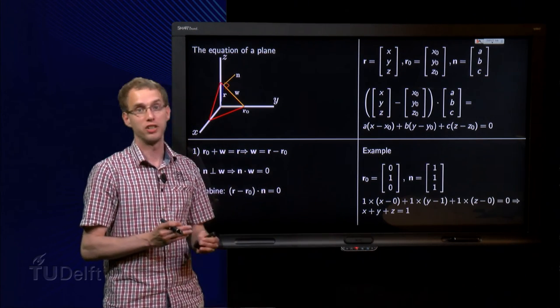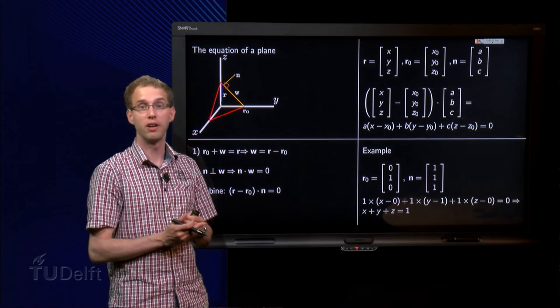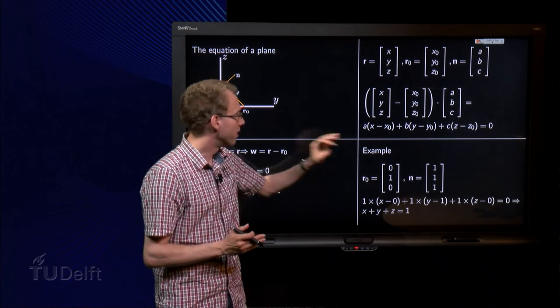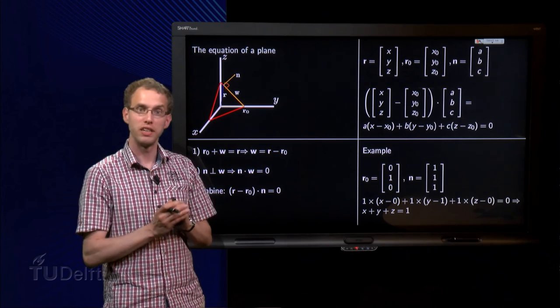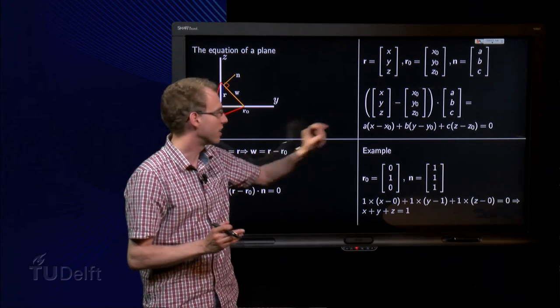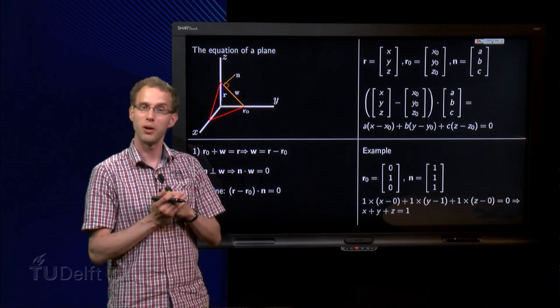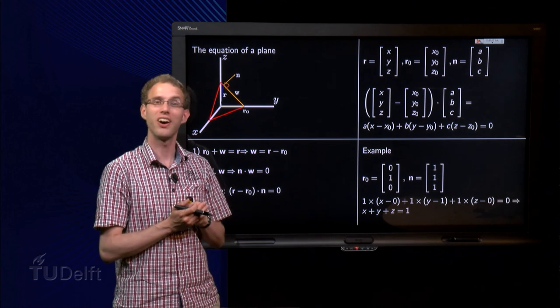So is it hard to find that one? Well, if you have your r0 and if you have your normal vector n, you can write down the equation for our plane straightforwardly, directly from this equation over here. So no, this one is not hard at all.